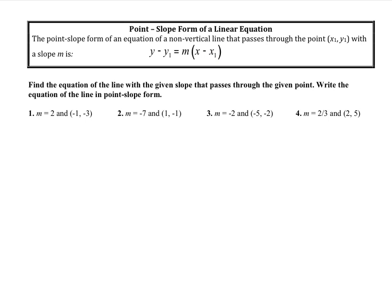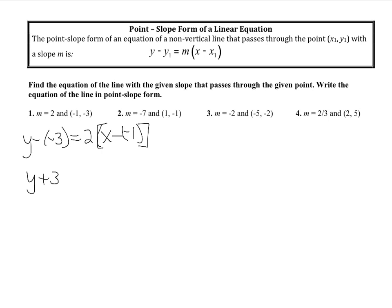Suppose I give you the slope and a point and say write this in point-slope form. I'm going to write y minus y1, and the y-value is negative 3, so that's y minus negative 3. That equals m which is 2, and then x minus the x-value which is negative 1. Minus a negative is a plus, so the form becomes y plus 3 equals 2 times (x plus 1).